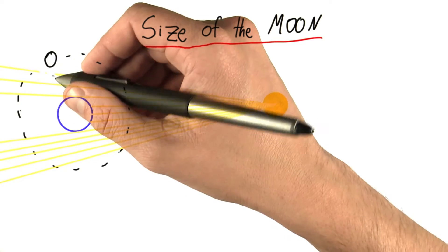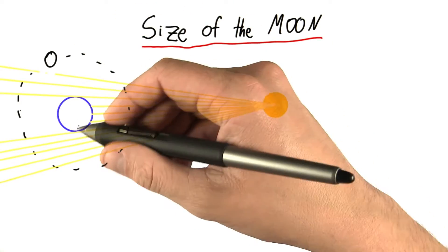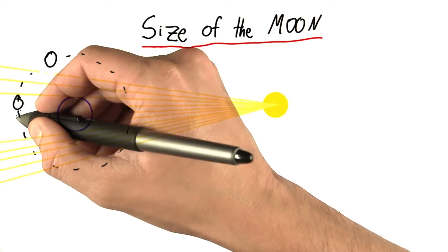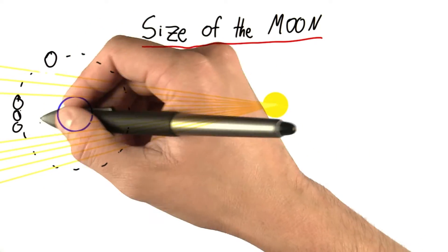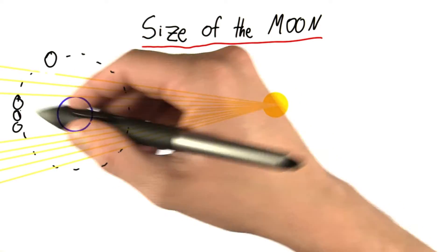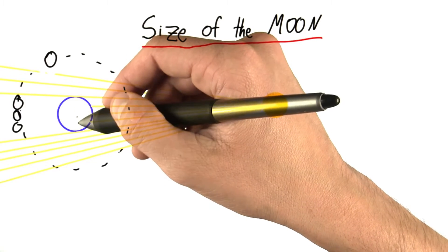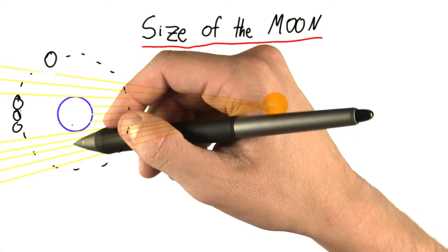What we want to do is figure out how big is the moon compared to the earth, since we know the size of the earth already. Can we fit one, two, three moons in one earth's shadow? If that were the case, then the moon would be one third the size of the earth. Or is it two moons in the earth's shadow, or seven, or 12? I don't know. Let's figure that out.